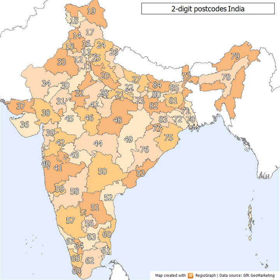The nine PIN zones cover the Indian states and Union territories as follows: Zone 1 — Delhi, Haryana, Punjab, Himachal Pradesh, Jammu and Kashmir, Chandigarh. Zone 2 — Uttar Pradesh, Uttarakhand. Zone 3 — Rajasthan, Gujarat, Daman and Diu, Dadra and Nagar Haveli. Zone 4 — Maharashtra, Goa, Madhya Pradesh, Chhattisgarh.